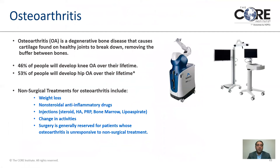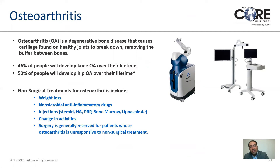Arthritis is a degenerative bone disease that causes the cartilage found on healthy joints to break down, removing the buffer between the bones. We mentioned one type of cartilage — the meniscus, the cushion between the bones — and then there's also the cartilage that coats the femur and the tibia, which is type 2 cartilage. It's so well made in our anatomy that it's more slippery than skates on ice. That's why we want to preserve as much of it as we can.